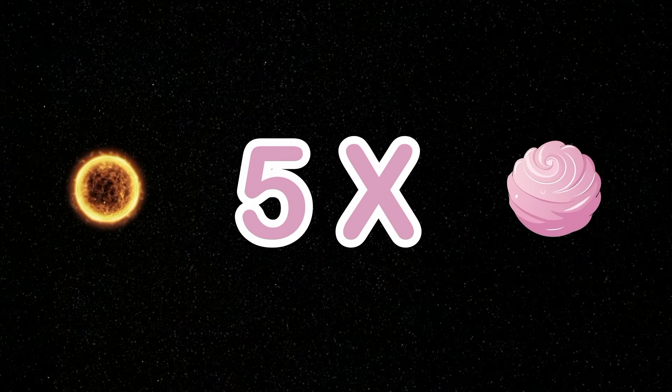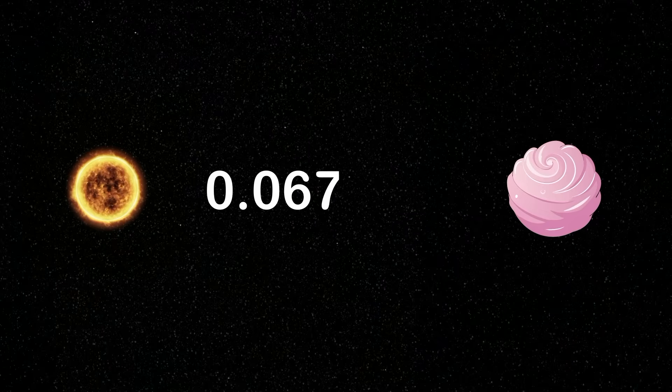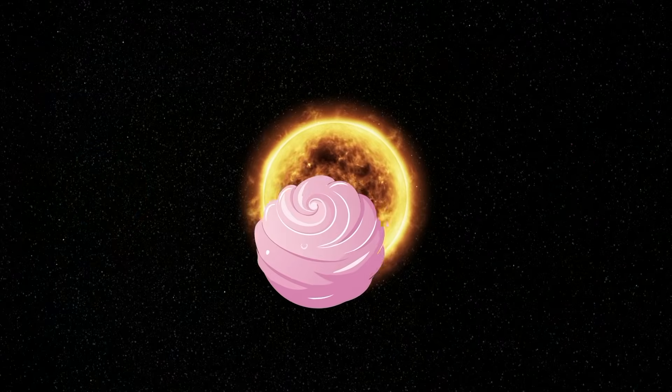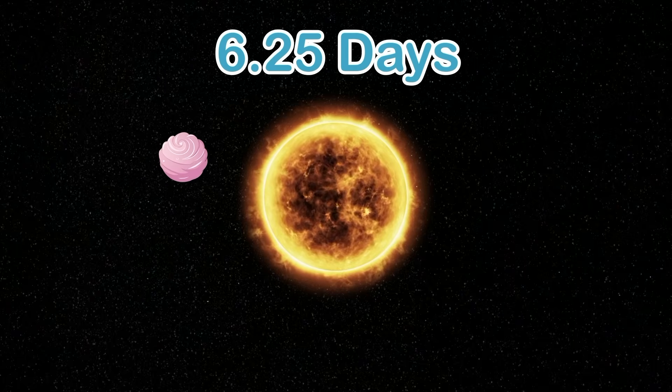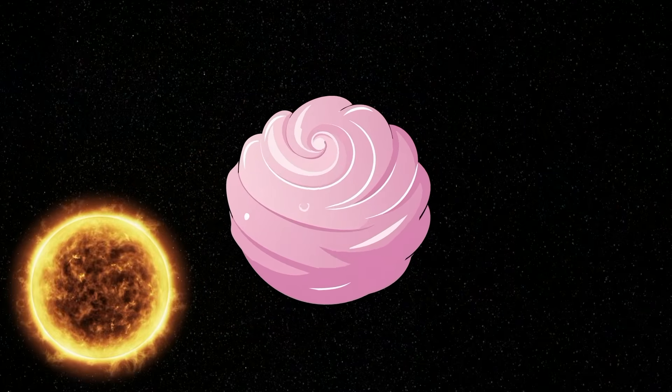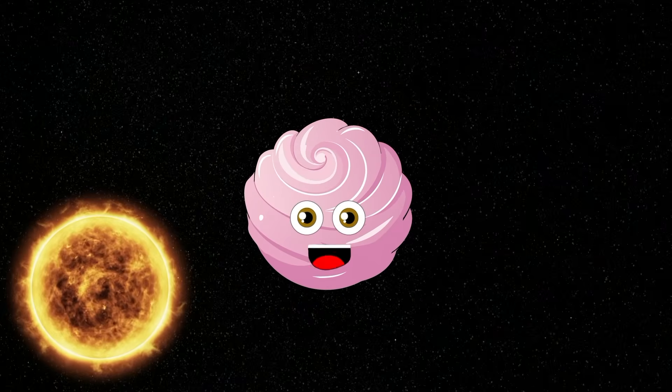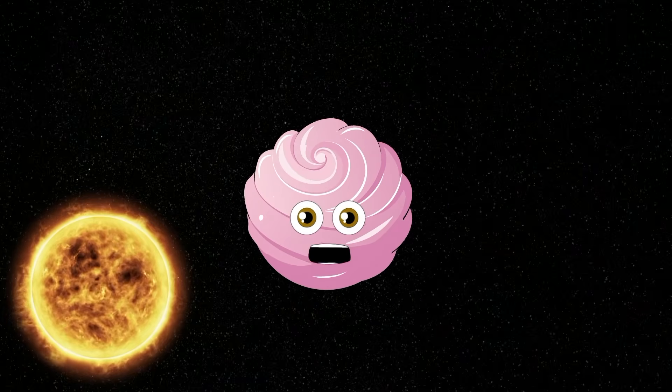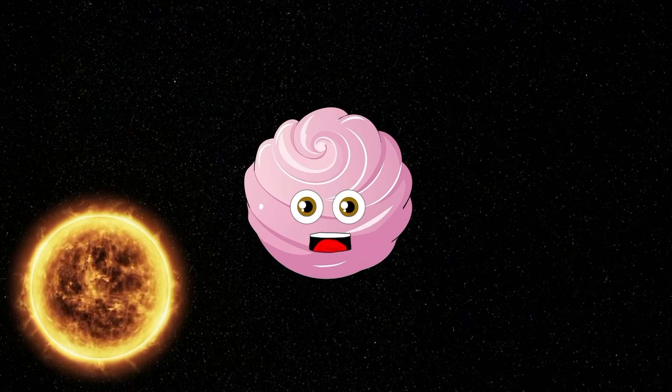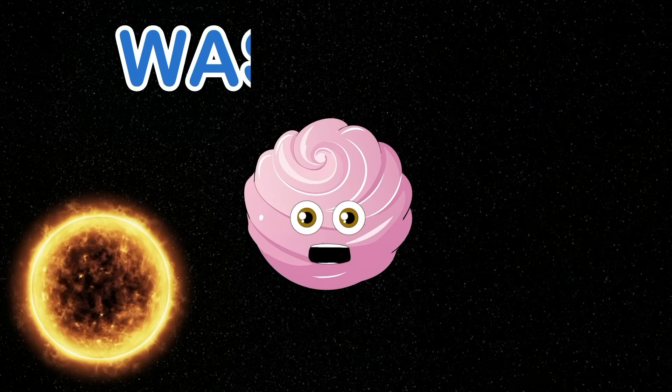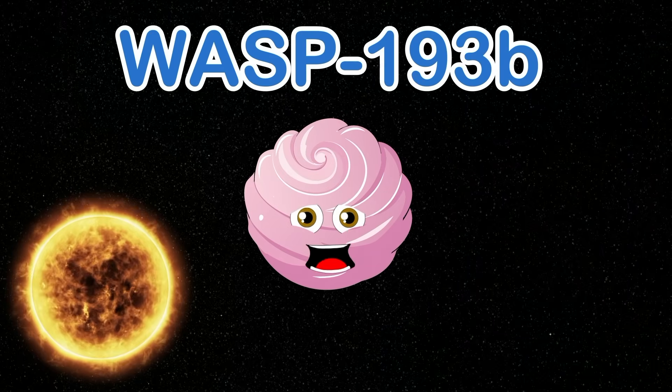I'm five times closer than Mercury to my star. At 0.0676 AU, that's not too far. I orbit my star once every 6.25 days. Light like cotton candy and so wide, a planet beyond your sky. Floating soft like a dream, so free. The mystery of WASP-193b.